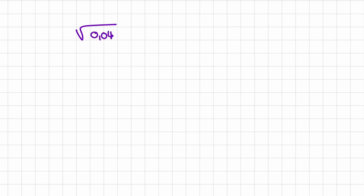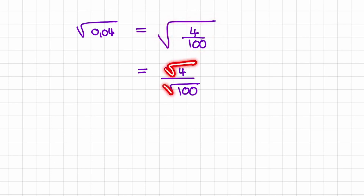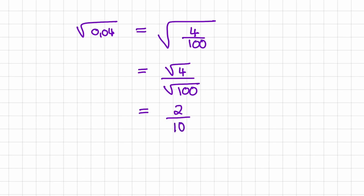Let us look at two more examples. Let's try and find the square root of 0.04. If you don't want to use your calculator, you can rewrite 0.04 as 4 over 100. Because it's division, you can take the square root and split it into two parts — the square root of the numerator and the square root of the denominator separately. This only applies to division and multiplication. So the square root of 4 is 2, and the square root of 100 is 10. Our answer is 2 over 10, which simplifies to 1 over 5.